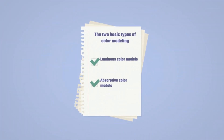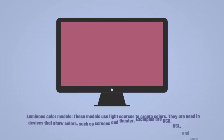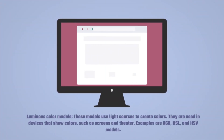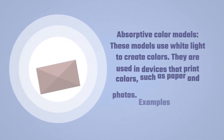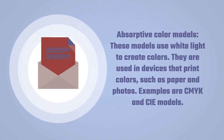The two basic types of color modeling are: luminous color models and absorptive color models. Luminous color models use light sources to create colors. They are used in devices that show colors, such as screens and theater. Examples are RGB, HSL, and HSV models. Absorptive color models use white light to create colors. They are used in devices that print colors, such as paper and photos. Examples are CMYK and CIE models.